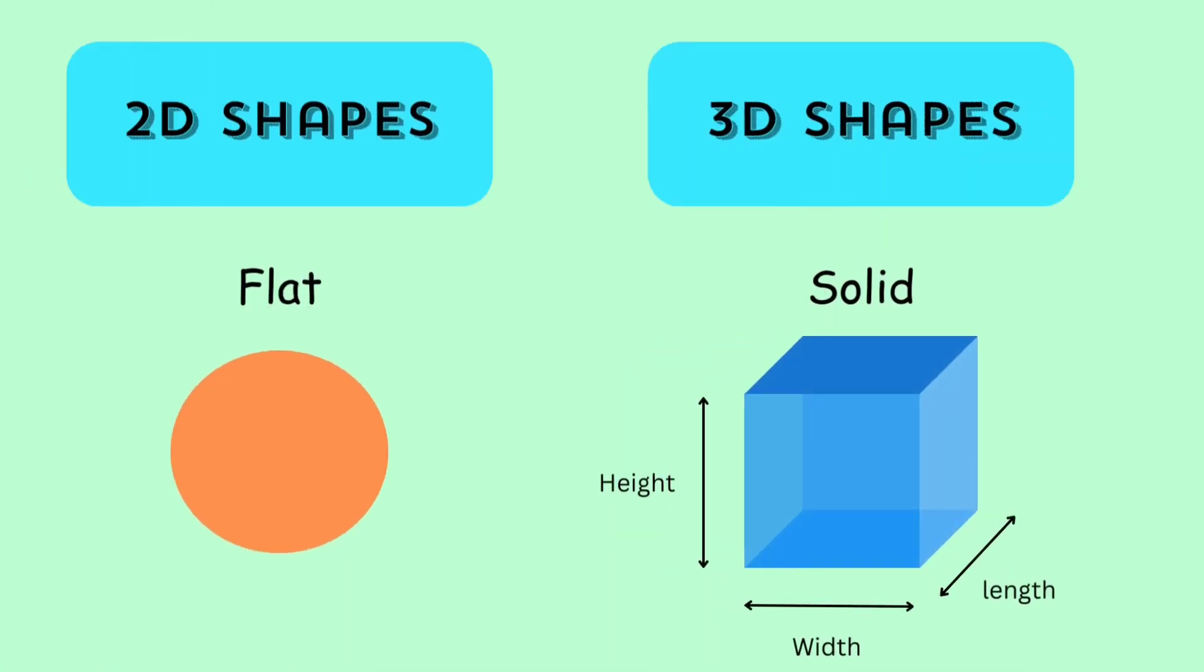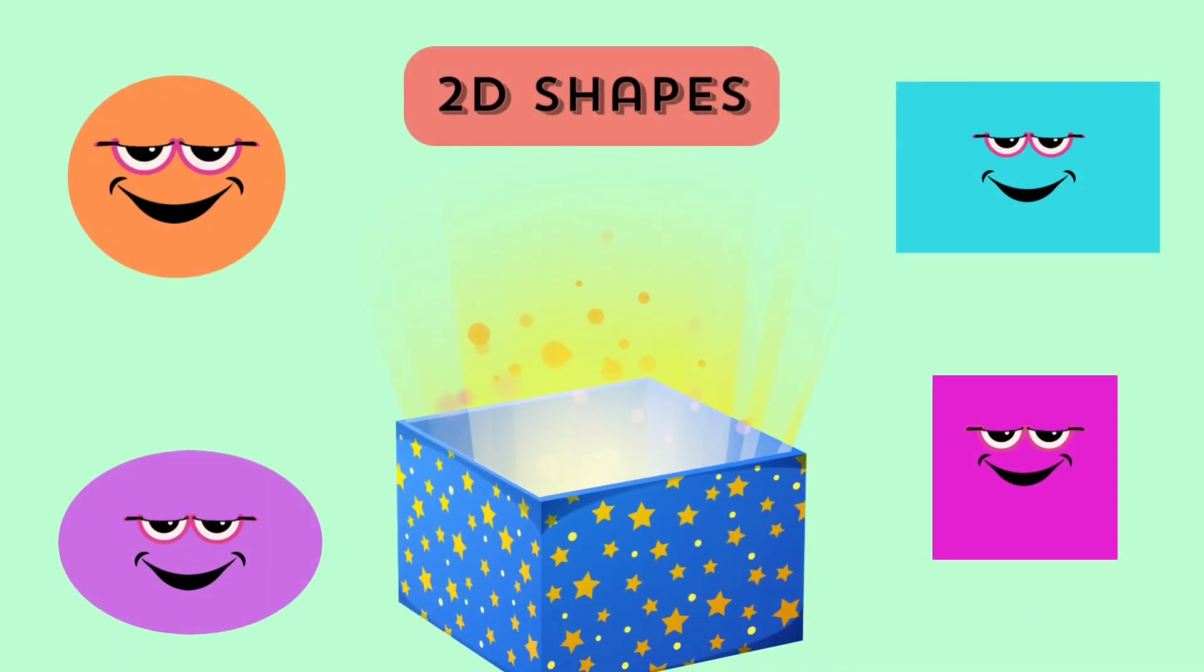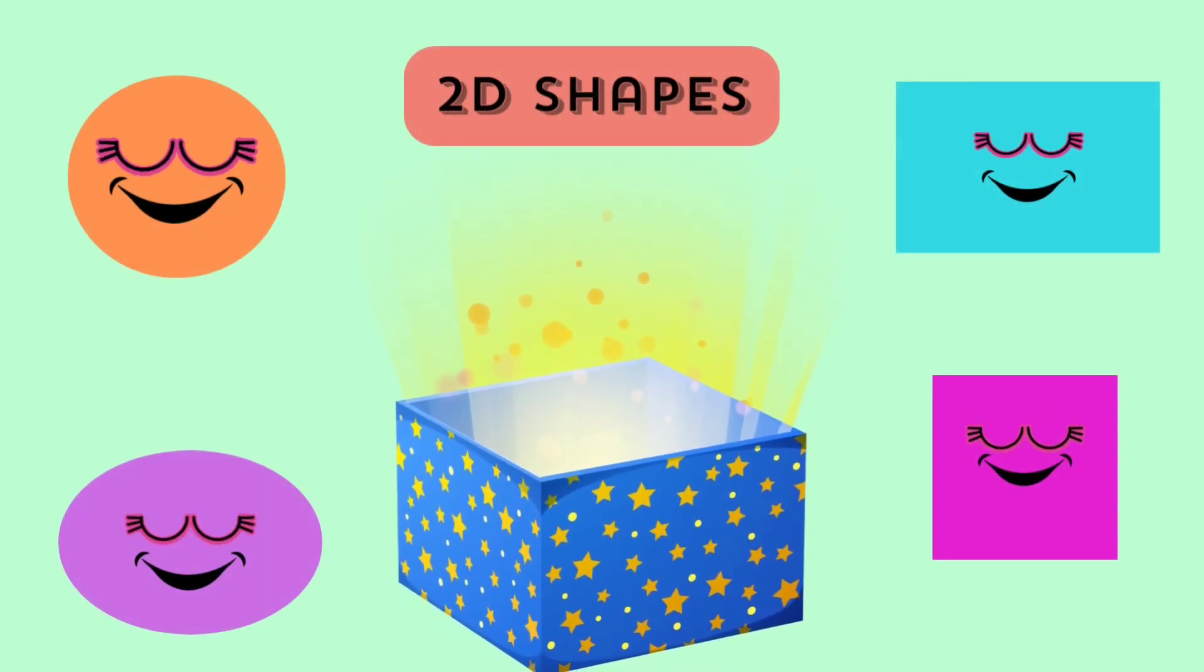How many of you know the 2D and 3D shapes? A 2D shape is a flat object. It has length and width but no height. For example, we can say circle, square, rectangle.